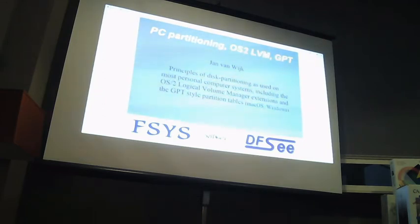On classic computers, IBM PC and whatever came after that, it's usually called MBR partitioning, which is the old way of partitioning hard disks still being used. For OS2, at a certain point, some added functionality was built into LVM, logical volume management, which sort of adds on to the MBR partitioning scheme, adding extra information like partition and volume names, drive letters, and stuff like that.